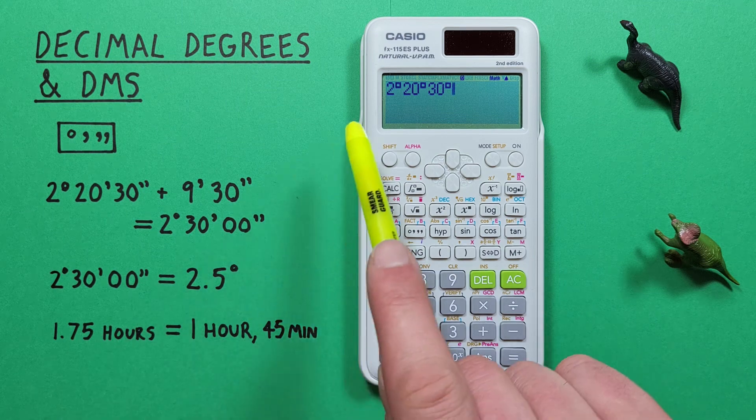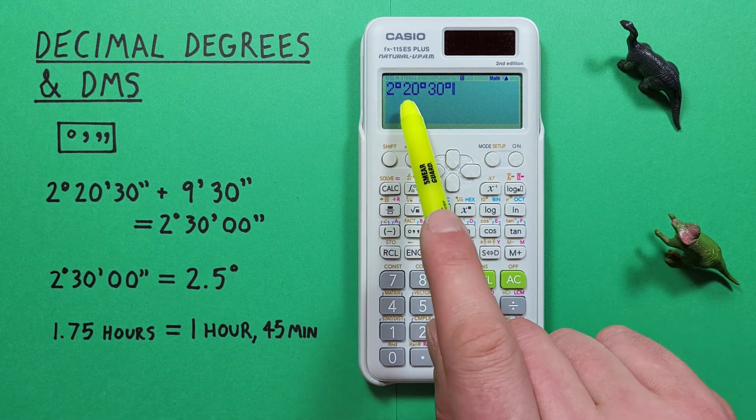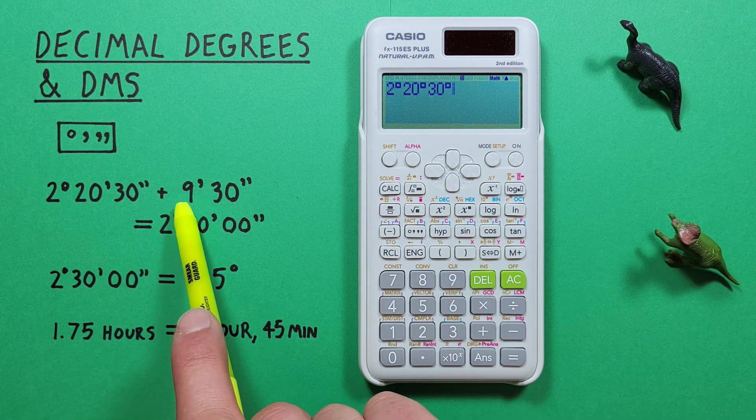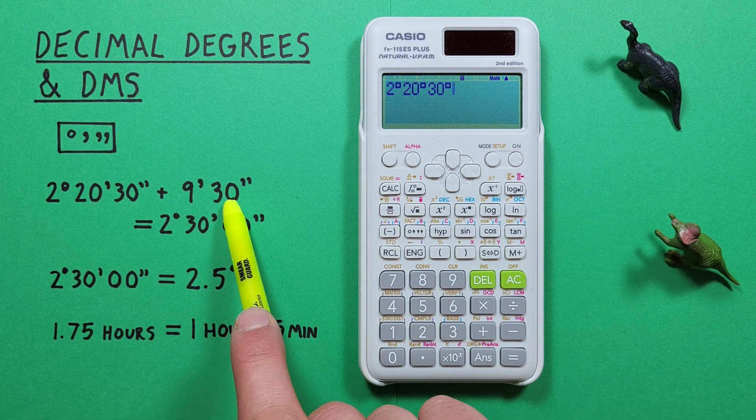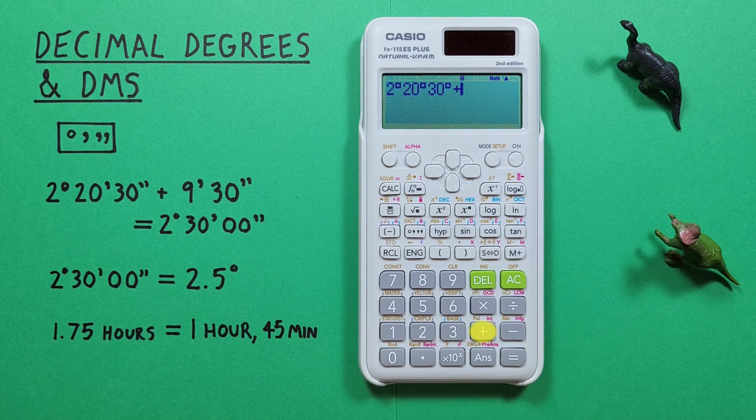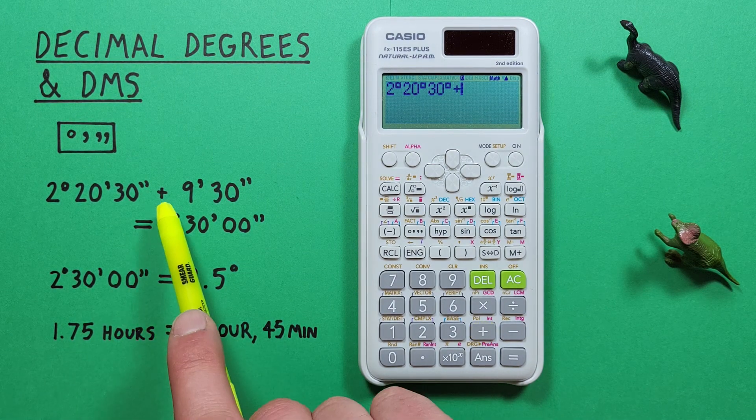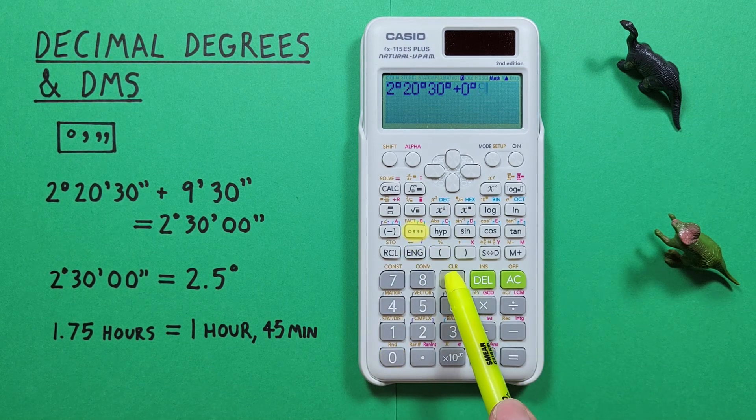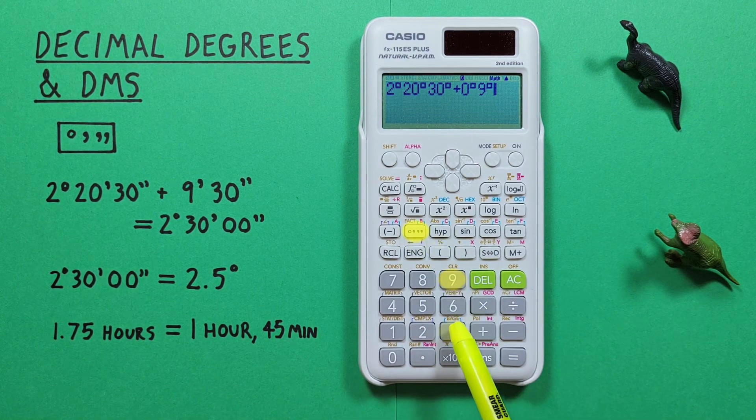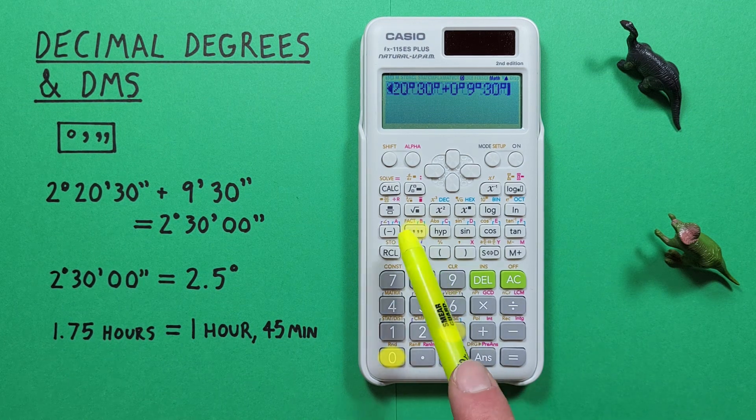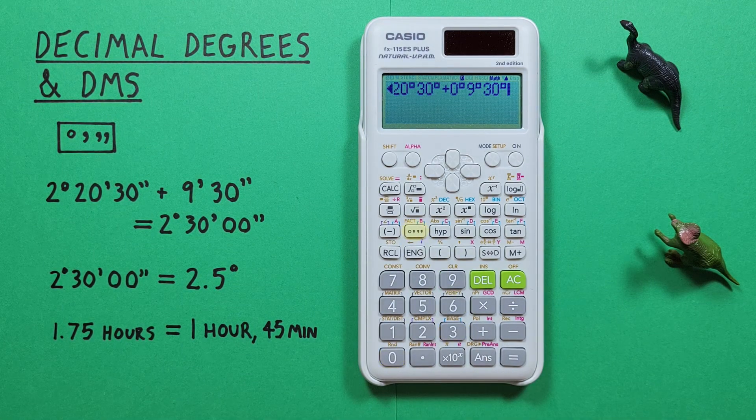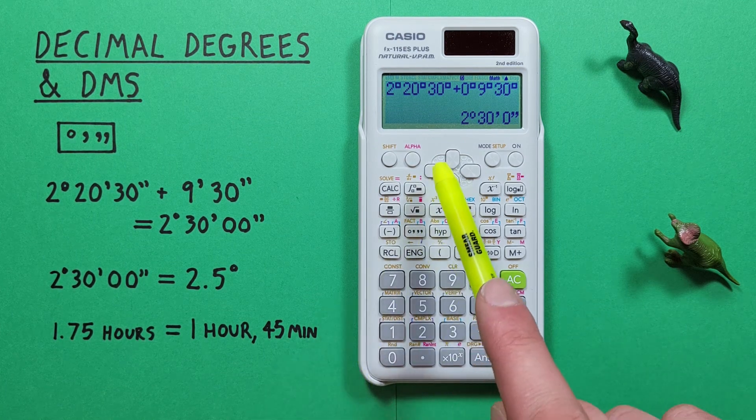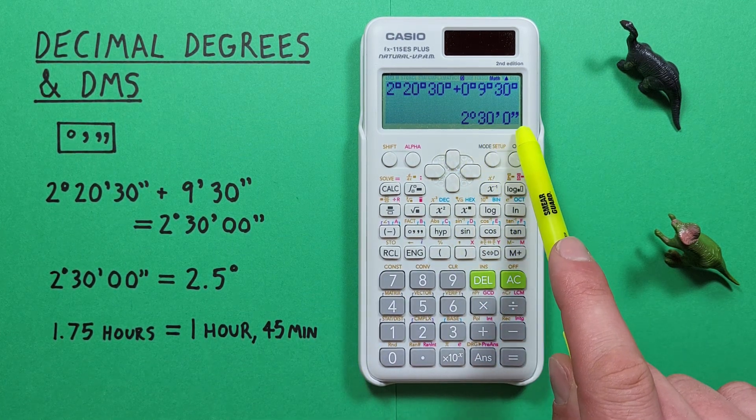So here we have 2 degrees 20 minutes 30 seconds and then plus 9 minutes 30 seconds. So we go plus, to start we have zero degrees in this one so we go 0 degrees 9 minutes 30 seconds, then we press equals and we see we get a result of 2 degrees 30 minutes 0 seconds.